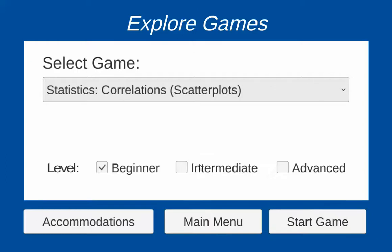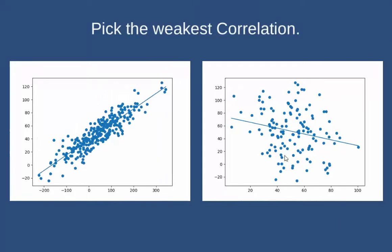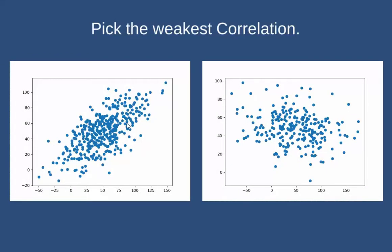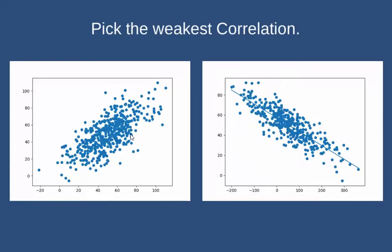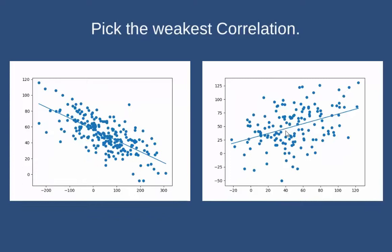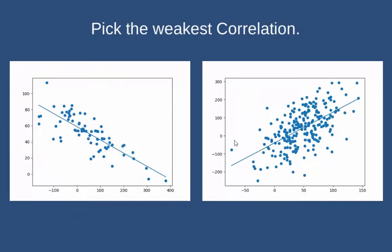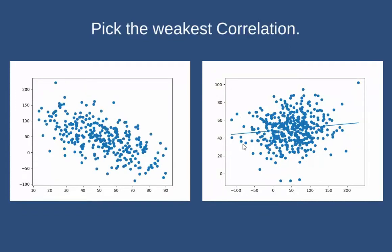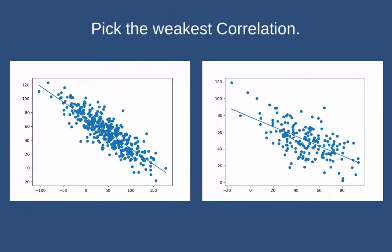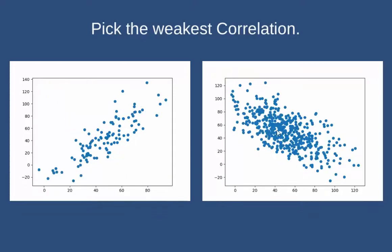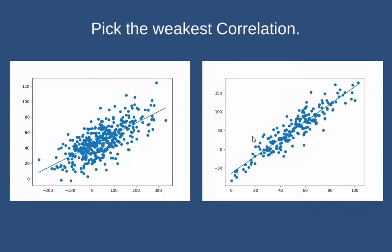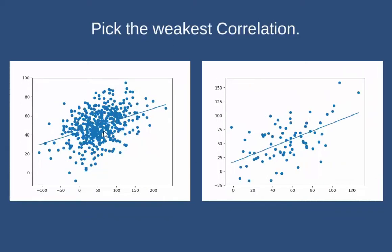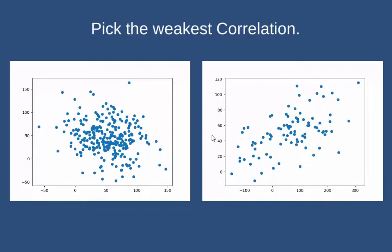We also have scatter plots. For this activity, you just pick whichever scatter plot represents the weaker correlation. The more that the dots look like a cloud, the weaker the correlation they're showing you, and the harder it would be to use the scatter plot to make predictions. There are some best-fitting lines drawn in some scatter plots — we use that line to make predictions. The closer those dots are to the best-fitting line, the more accurate our predictions will be. Strong correlations allow us to make better predictions; weak correlations are not as helpful given that they're scattered all over the place.